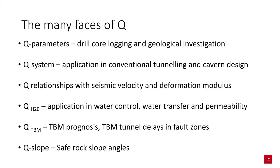Q-slope is just one of the many faces of Q. Q-parameters have been used in drill core logging and geological investigation, as well as in application for conventional tunnelling and cavern design for over 40 years. A relationship between Q and seismic velocity and deformation modulus have been well established, including changes with respect to depth. Q-H2O applies to water control, water transfer, and permeability. Q-TBM is used for TBM prognosis and particularly for tunnel delays in fault zones.